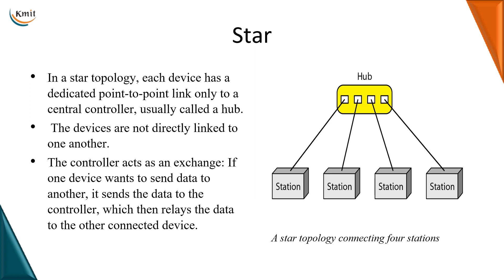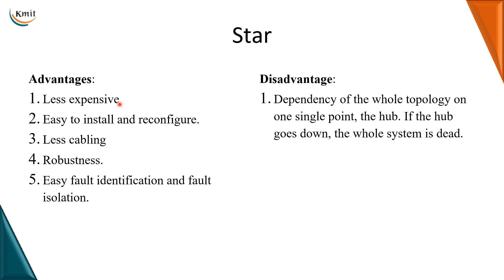Now let us see the advantages and disadvantages of star topology. The advantages: the number of cabling required is less, so it is less expensive. Because every device need not be connected with every other device, the installation and reconfiguration is very simple. There is less amount of cabling. The system is robust in the sense that if one device fails the link with the central controller, the other devices can communicate properly. There will be easy fault identification and fault isolation.